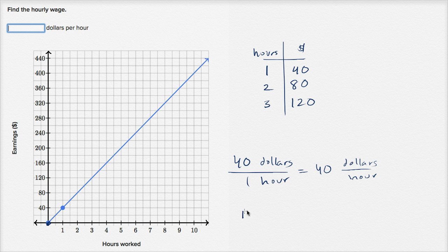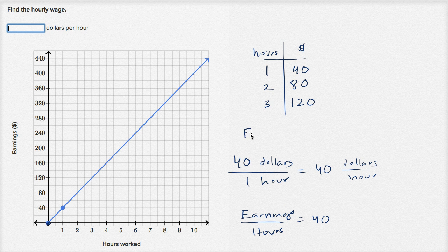So your earnings divided by hours is always going to equal 40. Or you could say that your earnings — if you multiply both sides by hours — is going to equal 40 times your hours. Your earnings in dollars equals 40 times your hours worked.